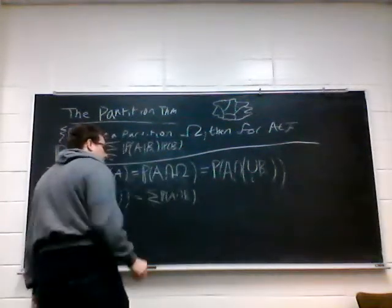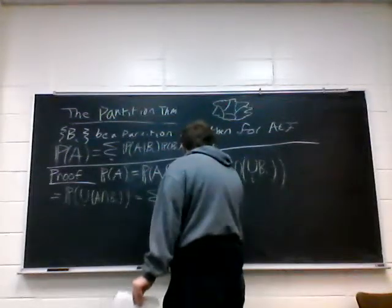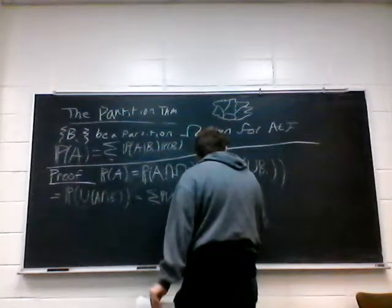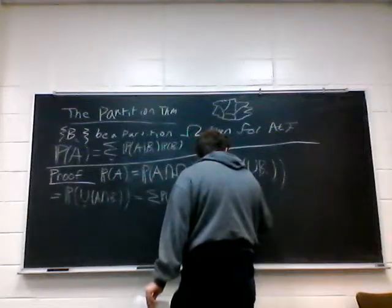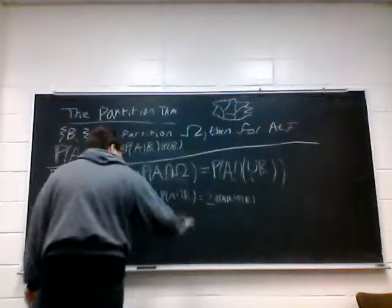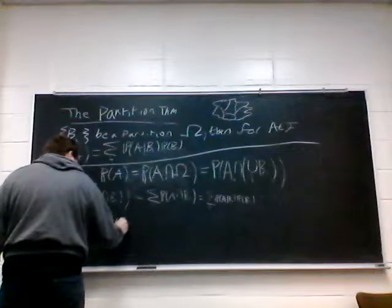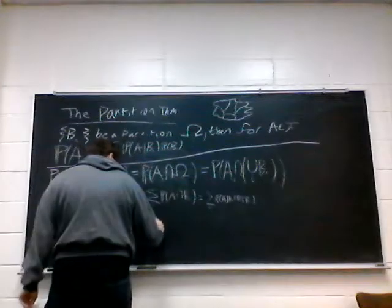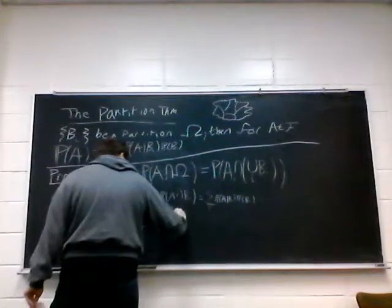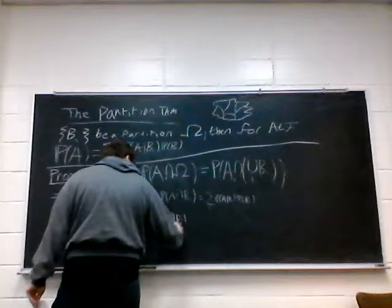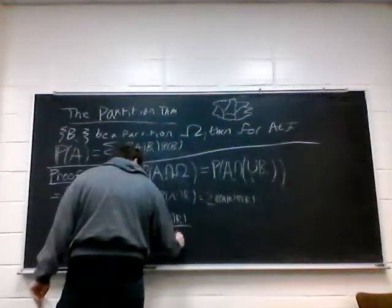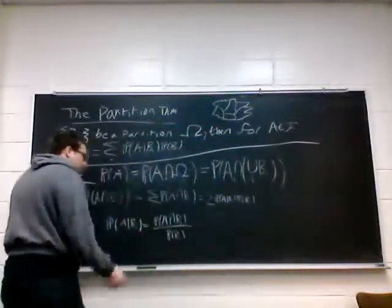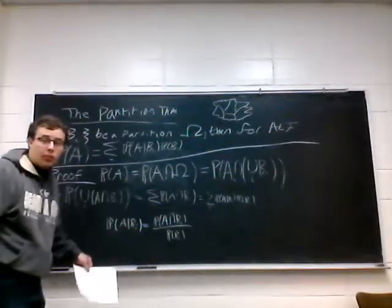What is the probability of A intersect V_i? That is equal to the probability of A given V_i times the probability of V_i. You get that because P(A | V_i) is defined as P(A intersect V_i) over P(V_i), so when you multiply both sides by P(V_i) you get the intersection equals this product. Substituting that in, you get the partition theorem.